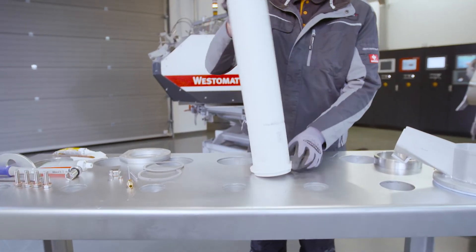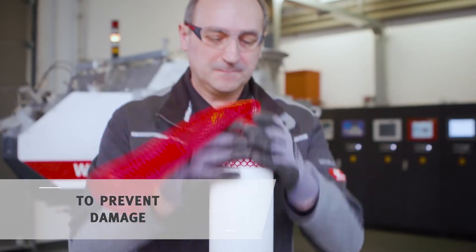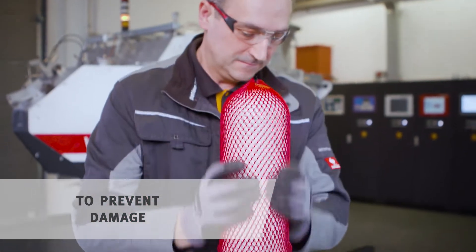Place the riser tube upright and put on the mica gasket and the steel flange. Now pull the protective sleeve over the riser tube.